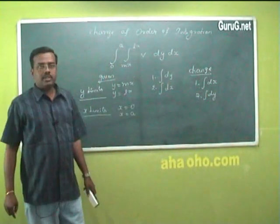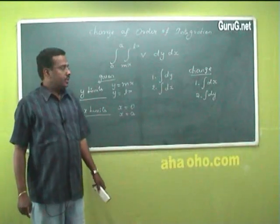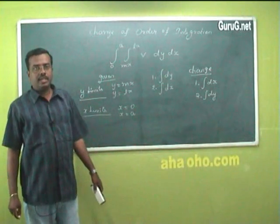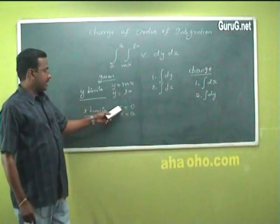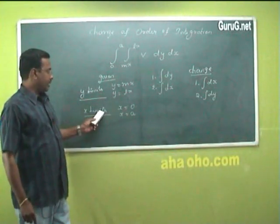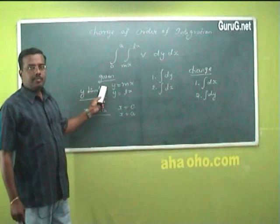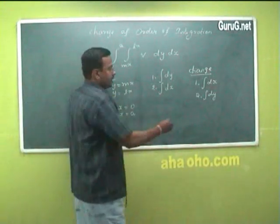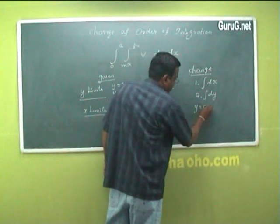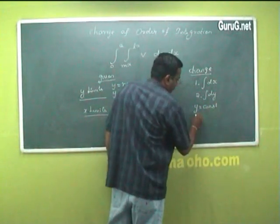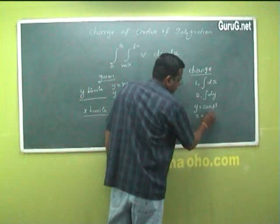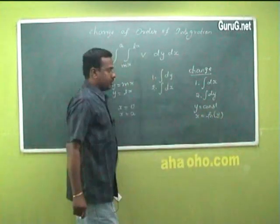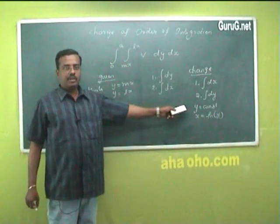The procedure for changing the order of integration is: you have to change the limits. Here, x limits are in terms of constants and y limits are in terms of x. Now I am going to change the y limits to constants and x limits to functions of y. This is the main procedure for changing the order of integration.